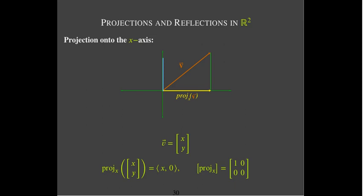It's very similar with the projection of v onto the y-axis. Now we just set the x component to 0 and keep the same y component. The image of the i vector would now be the 0 vector. But the j vector is not changed by projecting onto the y-axis, because it's already on the y-axis.